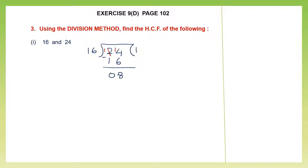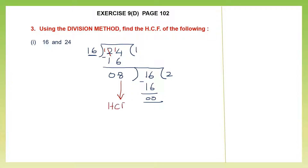We continue our division by using this remainder as our next divisor. So 8 is our divisor this time and 16 — which is the previous divisor — now becomes our dividend. We divide 16 by 8: 8 twos are 16, minus 0. We keep doing this division till we get remainder 0, and the last divisor that gives us remainder 0 is our HCF. So the HCF of 16 and 24 is 8. This is how we do the division method.